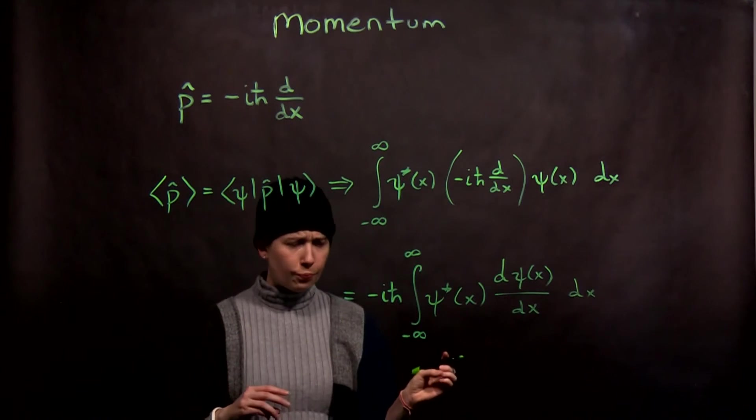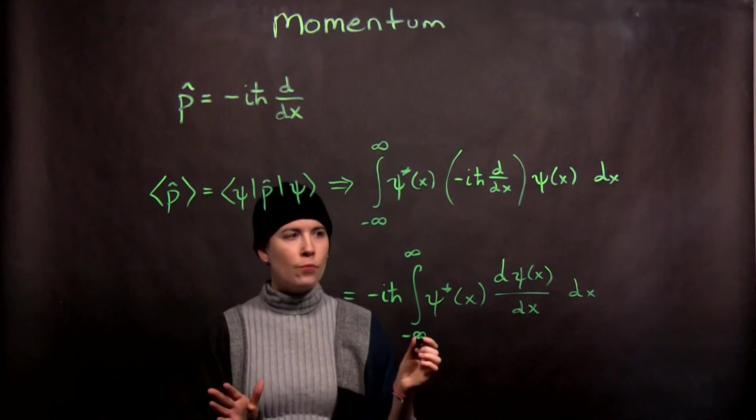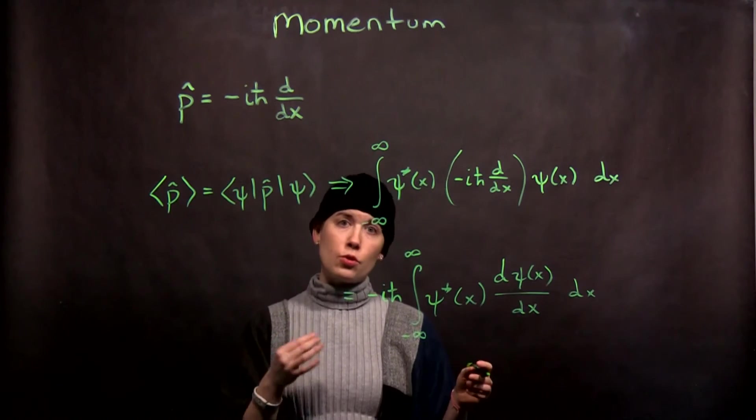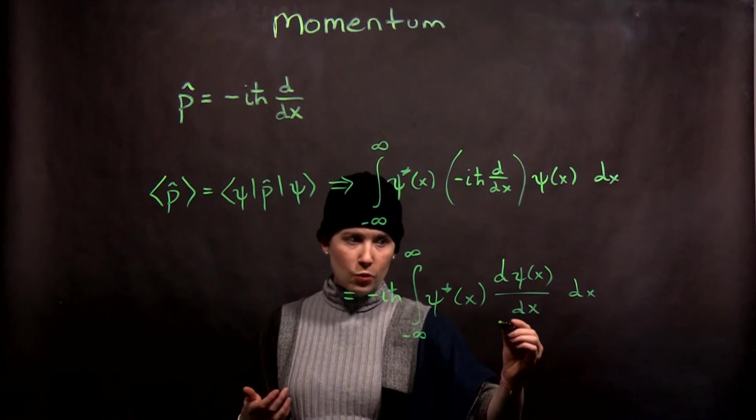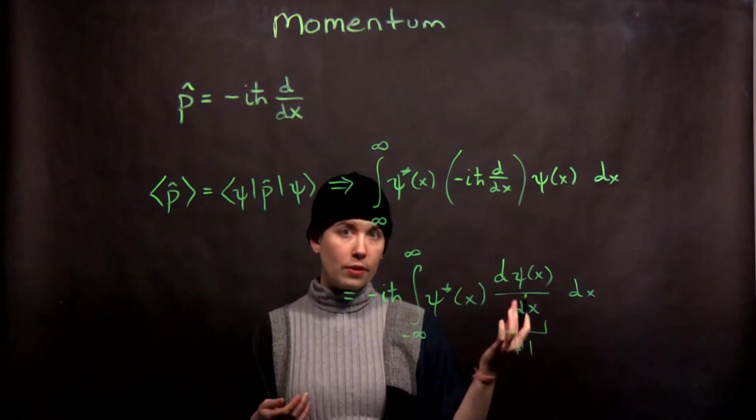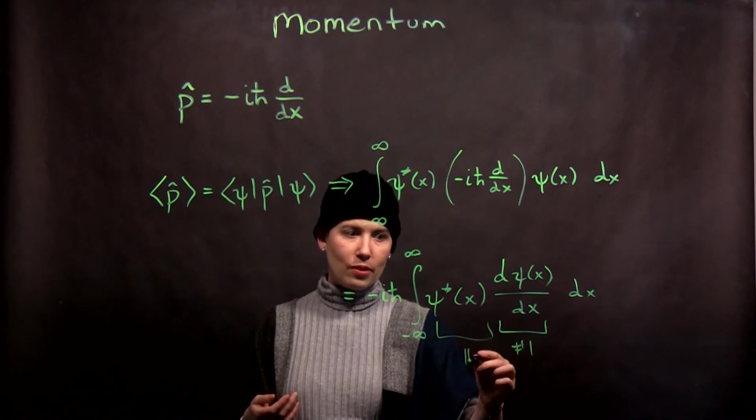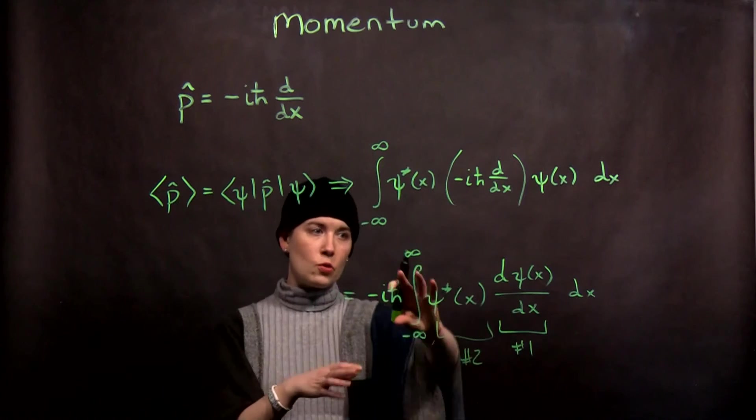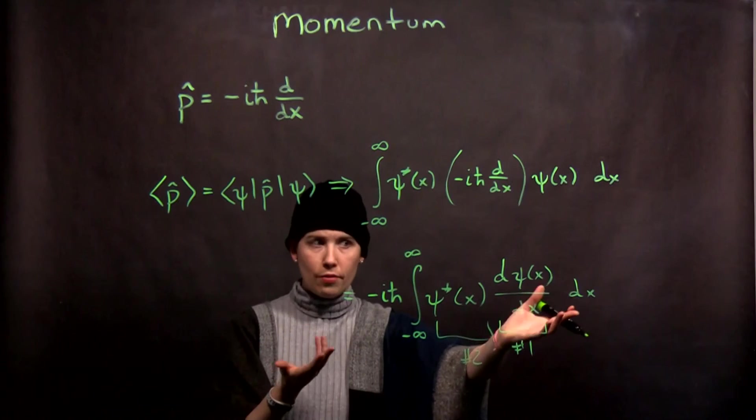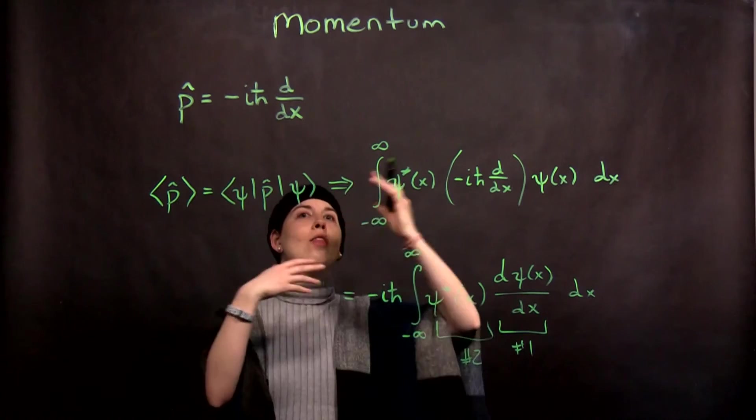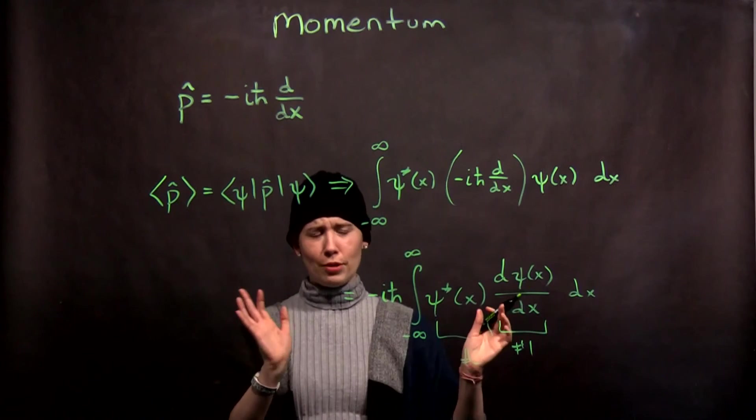And now, be careful. Don't start to say, hey look, these cancel. Be careful. You're going to have some sort of functional form for what psi of x is. So first, take this derivative, right? Figure out what the functional form is. Then you're going to multiply it with this. So you get this new thing on the inside, which is the complex conjugate of your function multiplied by the derivative of your function. And then you integrate it. So don't just cancel these. That's not going to be a good approach here.